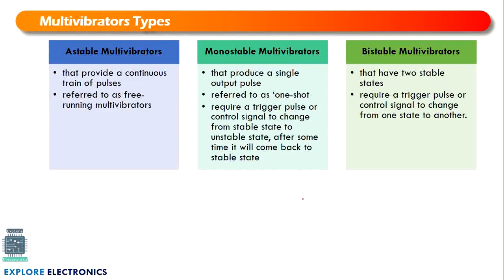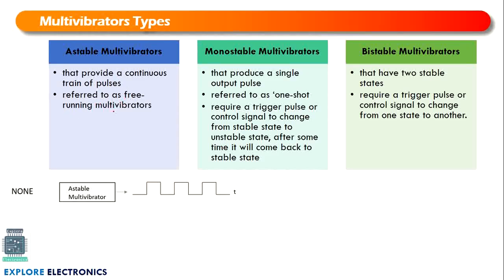There are three types of multivibrators: astable multivibrator, monostable multivibrator, and bistable multivibrator. The astable multivibrator, as the name suggests, produces a continuous square wave — a continuous train of pulses. It is also referred to as a free running multivibrator.